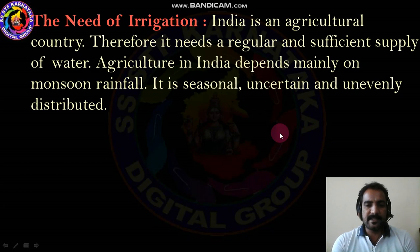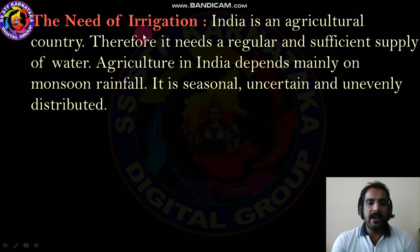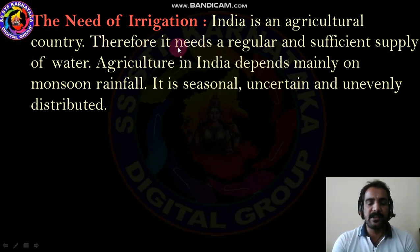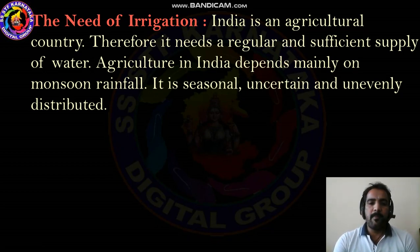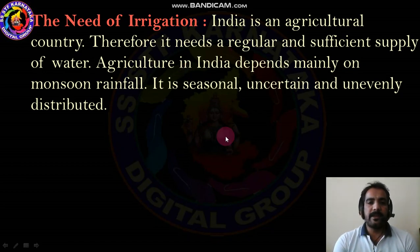Because of this uneven distribution, we need a regular supply of water. That is the reason we need irrigation in India. This is a most important question that exams repeatedly ask — keep it in mind. Monsoon rainfall is seasonal, uncertain, and unevenly distributed, so because of that reason we need irrigation.